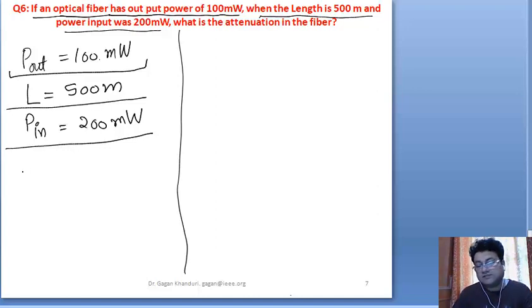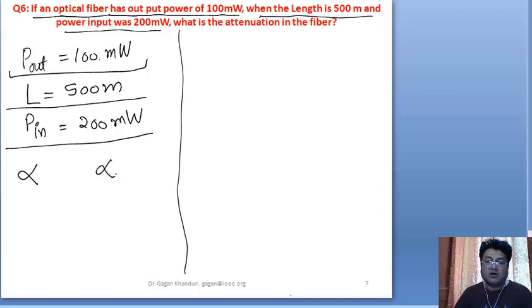When it says attenuation, it may have two meanings. The questions most of the time are ambiguous in the sense that you don't know whether it's asking for alpha or alpha_L. This is attenuation coefficient and this is attenuation loss.